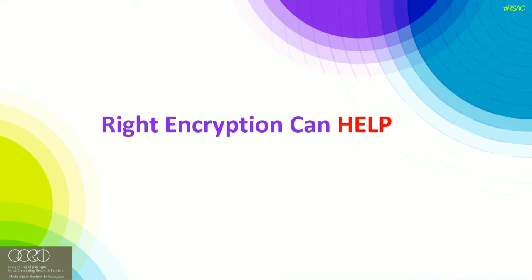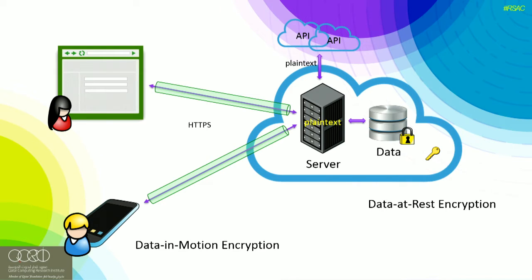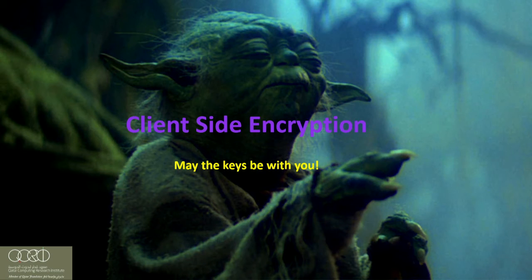One obvious solution is to use encryption. What kind would work here? One popular kind is data-at-rest encryption. Most cloud service providers offer this: data is encrypted when not in use, but the keys are with the service provider, and when decrypted the data is available at the provider — so it doesn't address our threat model. The other popular kind is data-in-motion encryption, or transport layer encryption, which prevents many man-in-the-middle attacks. But as you can see, it doesn't prevent the threats we're talking about either.